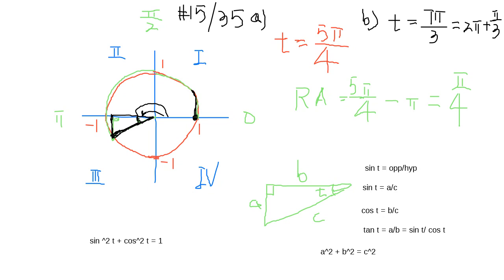So then how do we form the triangle? We connect the point — the point is here on the unit circle — with the origin. We drop a perpendicular line to the x-axis. Now we have a right triangle to work with. The reference angle is the angle here around the origin. So the reference angle is π/3. The reference angle is always found in the triangle — we need to form the triangle.